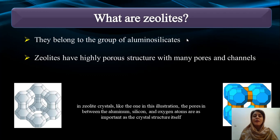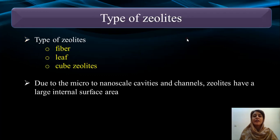Zeolites belong to the group of aluminosilicates, and they have a highly porous structure with many pores and channels. In zeolite crystals, like the one in this illustration, the pores in between the aluminum, silicon, and oxygen atoms are as important as the crystal structure itself.